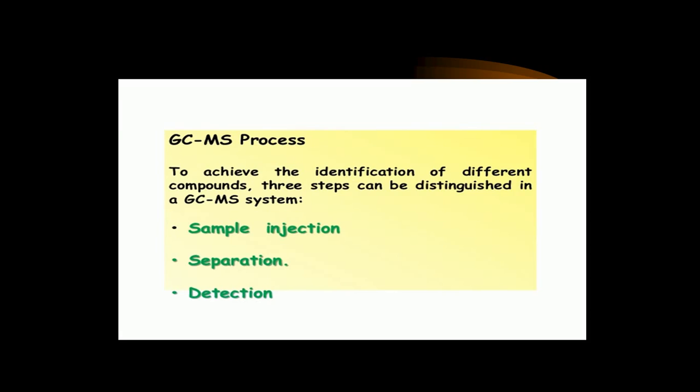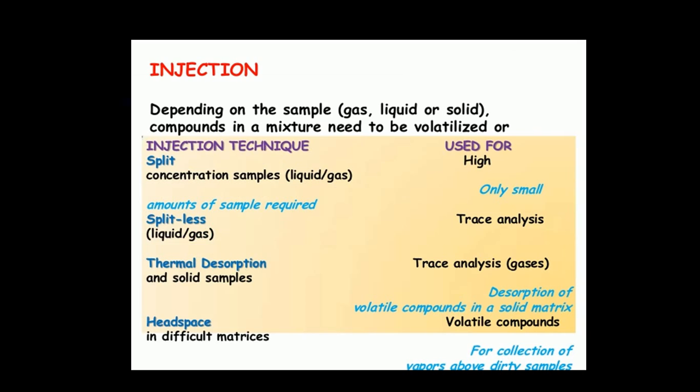The GCMS process is mainly based on three steps: first is sample injection, second is separation, and third is detection. Injection can be done on sample gas, liquid, or solid compounds in which material needs to be volatilized. Then, after injection, thermal desorption takes place and the vapors are collected.